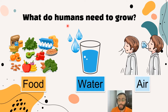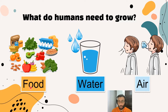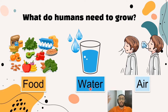If you want to grow, what do you need? First, you need food. You need to eat food, but not too much and also not too little. You need to eat food to grow. Another thing you need to grow is water. You need to drink water.